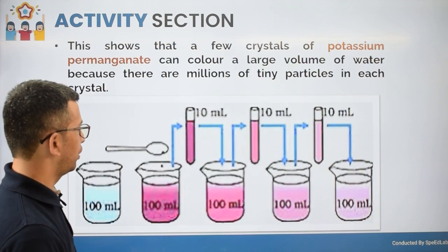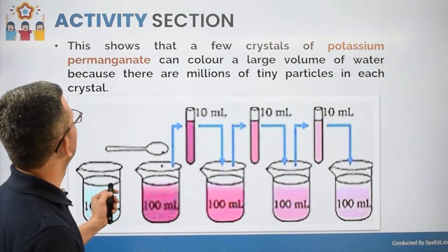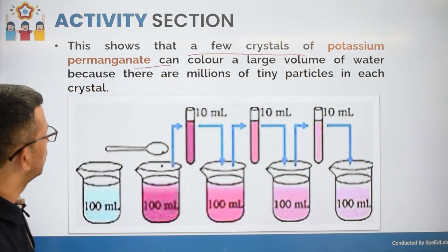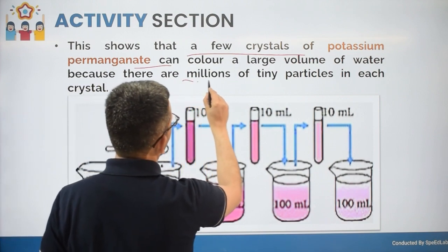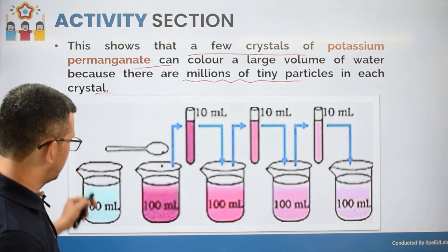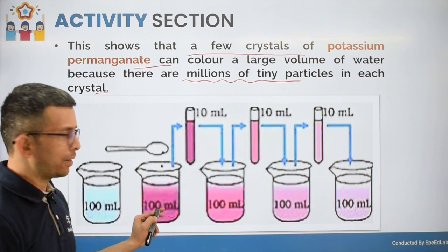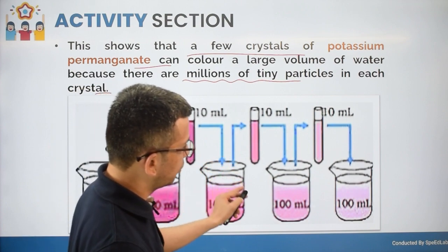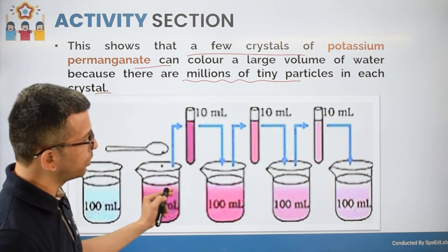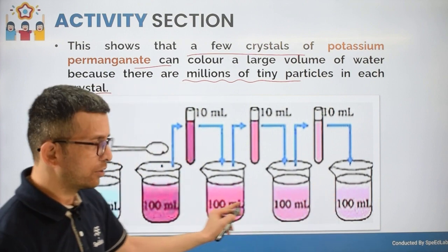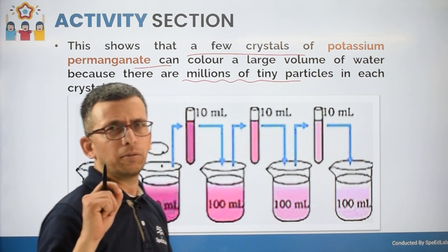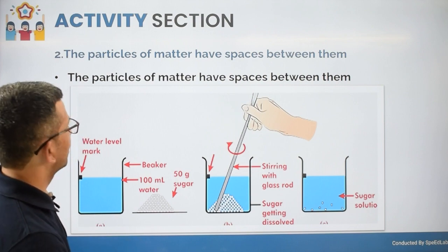This is the graphical representation of the activity. A few crystals of potassium permanganate can color a large volume of water because there are millions of tiny particles in each crystal. Starting with 100 ml of water, adding potassium permanganate, then taking 10 ml portions into fresh 100 ml water four to five times — coloration is still visible, proving crystals contain millions of very small particles.